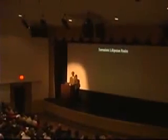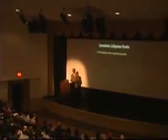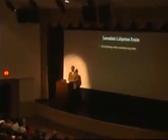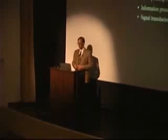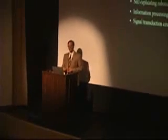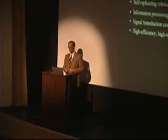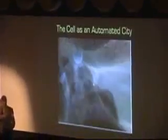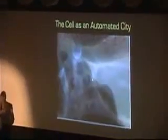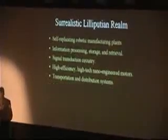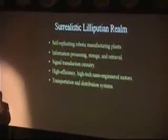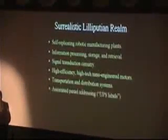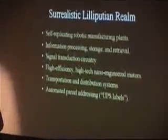It's just marvelous the sorts of things that happen inside the cell. You've got self-replicating robotic manufacturing plants, information processing, storage and retrieval, signal transduction circuitry, high-efficiency, high-tech nano-engineered motors, transportation and distribution systems, automated parcel addressing — UPS labels, zip codes. Things have to be delivered from one place in the cell to another.